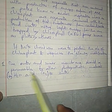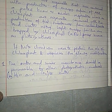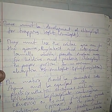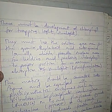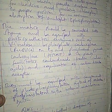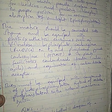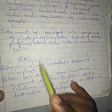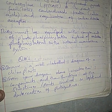If mitochondria were to perform the function of chloroplasts, the modifications required would include: the outer and inner membranes should be permeable to allow photosynthetic materials; there must be development of chlorophyll for trapping sunlight; they must lose cristae to give room for grana and thylakoids; the matrix should be converted into stroma and be equipped with photosynthetic enzymes such as RuBisCO and PEP carboxylase; and they must be equipped with components of photophosphorylation instead of oxidative phosphorylation on the inner membrane.